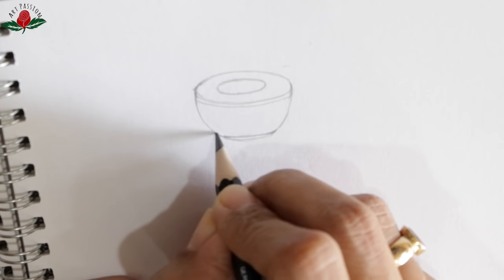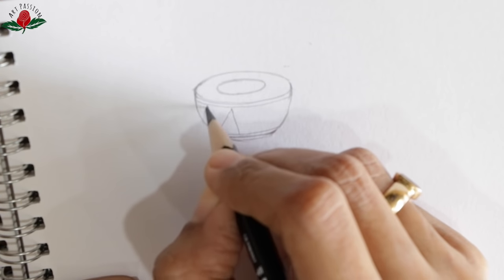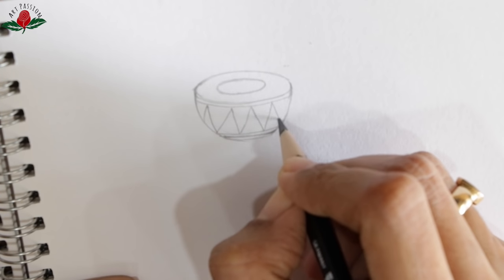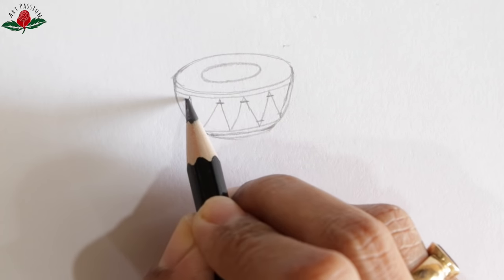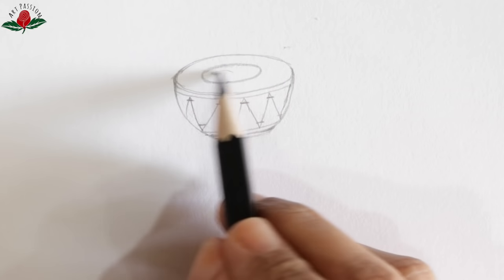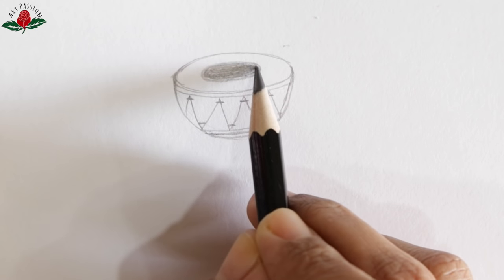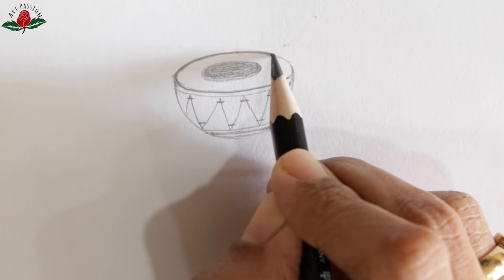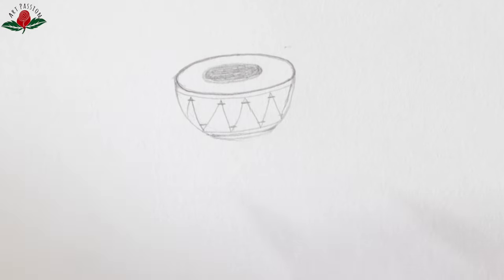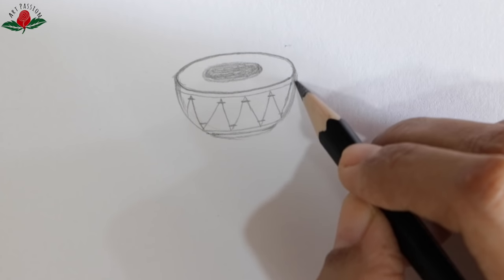So our first instrument is nagada - it's one type of dol, but it is played by stick, unlike traditional dolak or tabla. Whenever we draw these types of objects, it's very important to understand from where we are going to see this object. Like the one I am drawing right now, I am imagining it has been kept straight on base in front of me. So if it is in front of me, how will it look like? And if I am looking at it from top view, how will it look like?